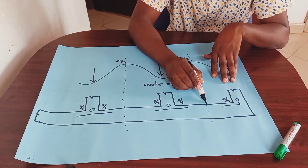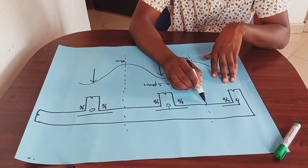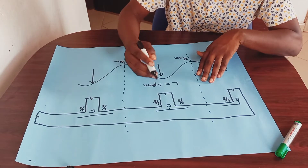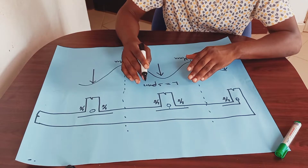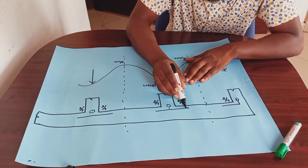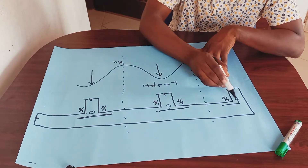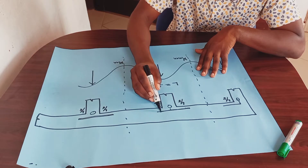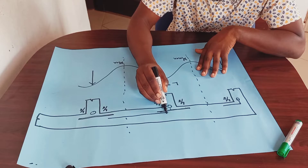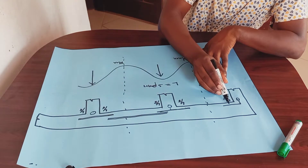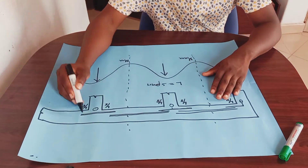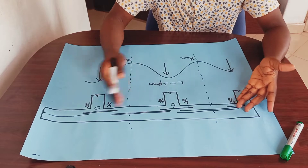At the middle span, moment is maximum. There is no need for curtailment at the mid span whatsoever. We can manipulate our bar at the support at the bottom, but at the middle span our bar must be complete — same for both spans.